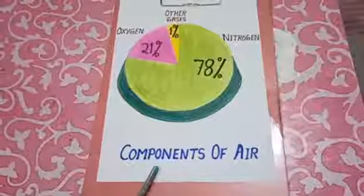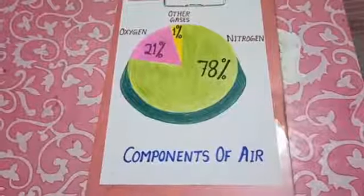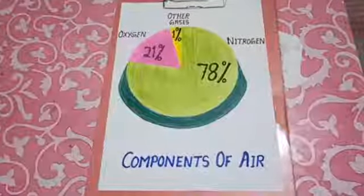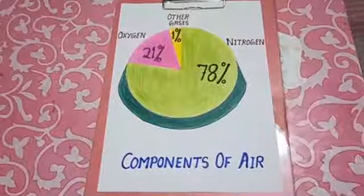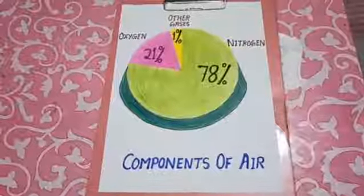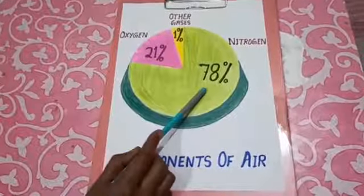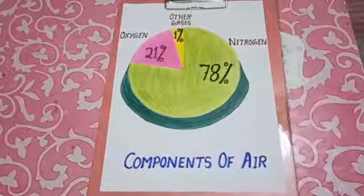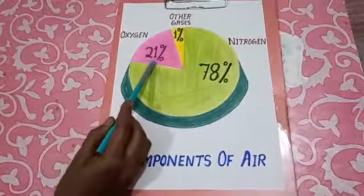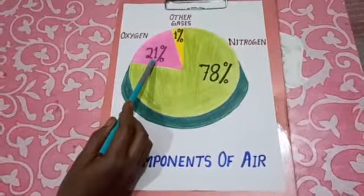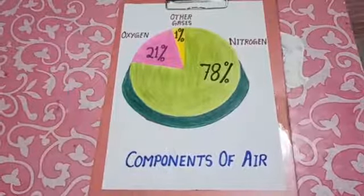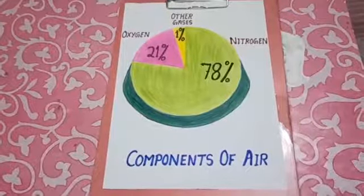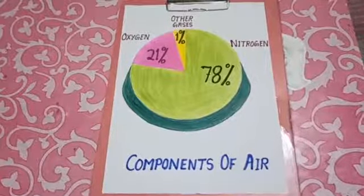Components of air. Air is a mixture of gases. Nitrogen is the most abundant gas present in the air, which makes 78% of the air and is necessary for the growth of plants. About 21% of air comprises oxygen. Oxygen is needed by living things for respiration. It is also needed for burning things.